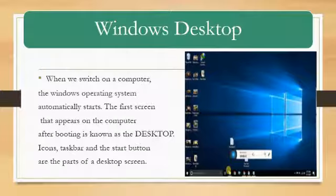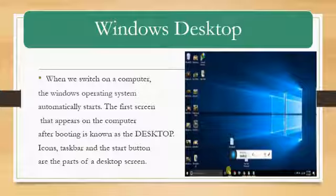Next, Windows Desktop. Now all of you know what a desktop is. Desktop is that screen which comes after we start the computer — it is the first screen. When we switch on a computer the Windows operating system automatically starts. The first screen that comes is called the desktop, and its parts are: icons, taskbar, and start button. The taskbar is the lowest bar with small icons, and the start button is on the left corner of the taskbar.